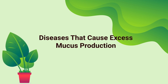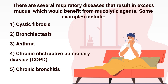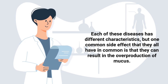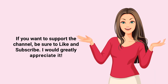There are several respiratory diseases that result in excess mucus production and would benefit from mucolytic agents. Some examples include cystic fibrosis, bronchiectasis, asthma, COPD, and chronic bronchitis. Each of these diseases has different characteristics, but one common side effect they all share is that they can result in the overproduction of mucus, which can lead to difficulty breathing and other respiratory problems.